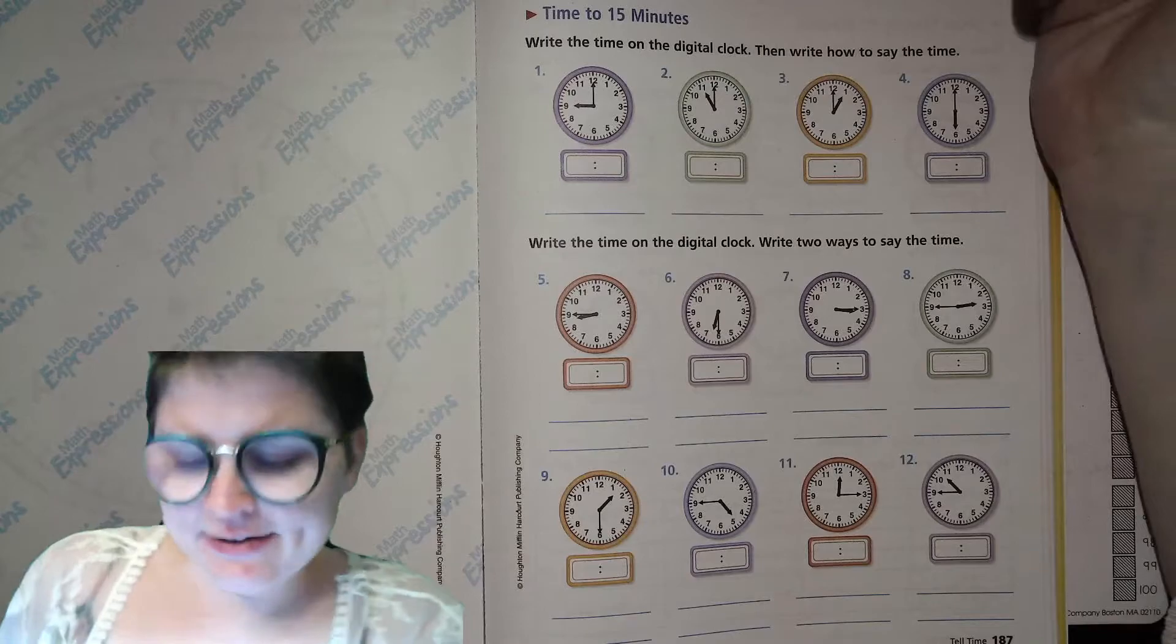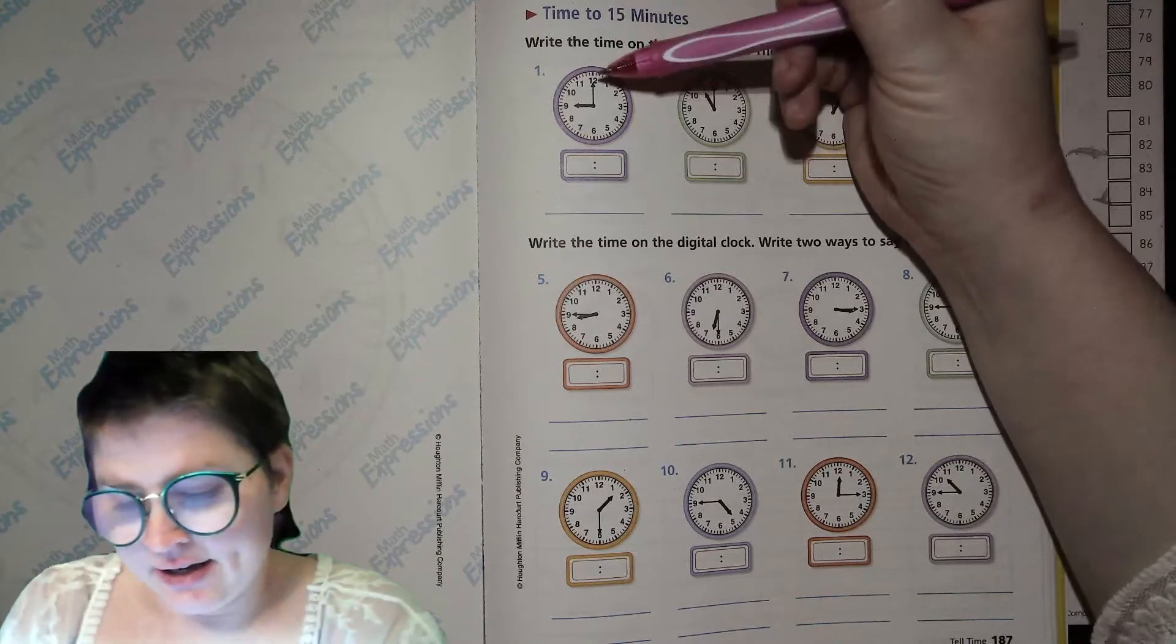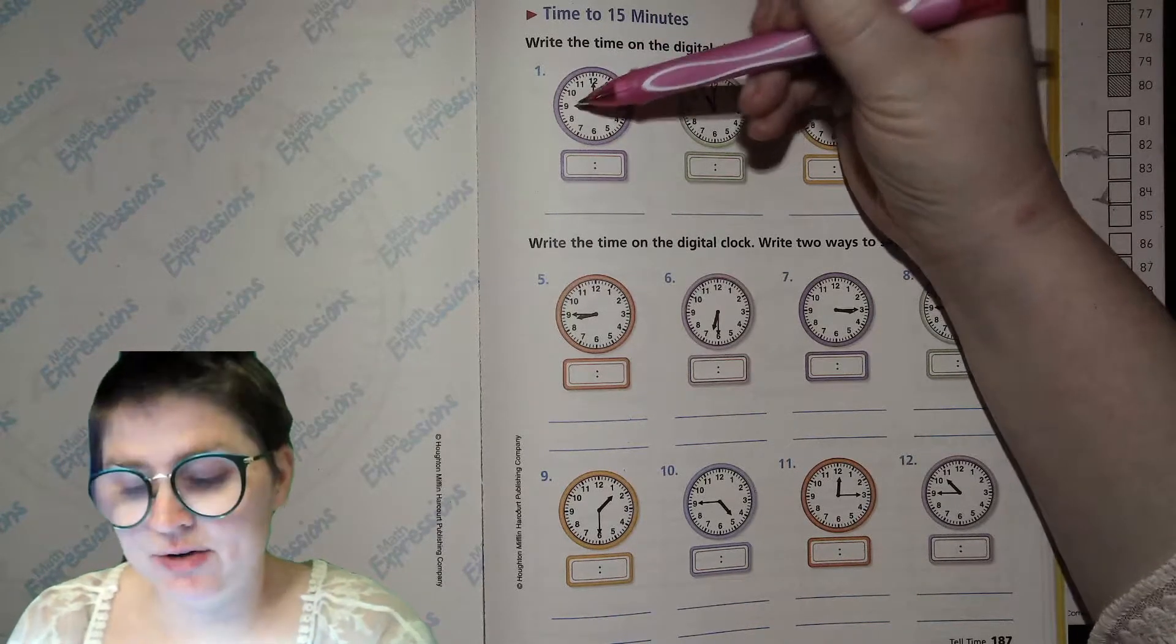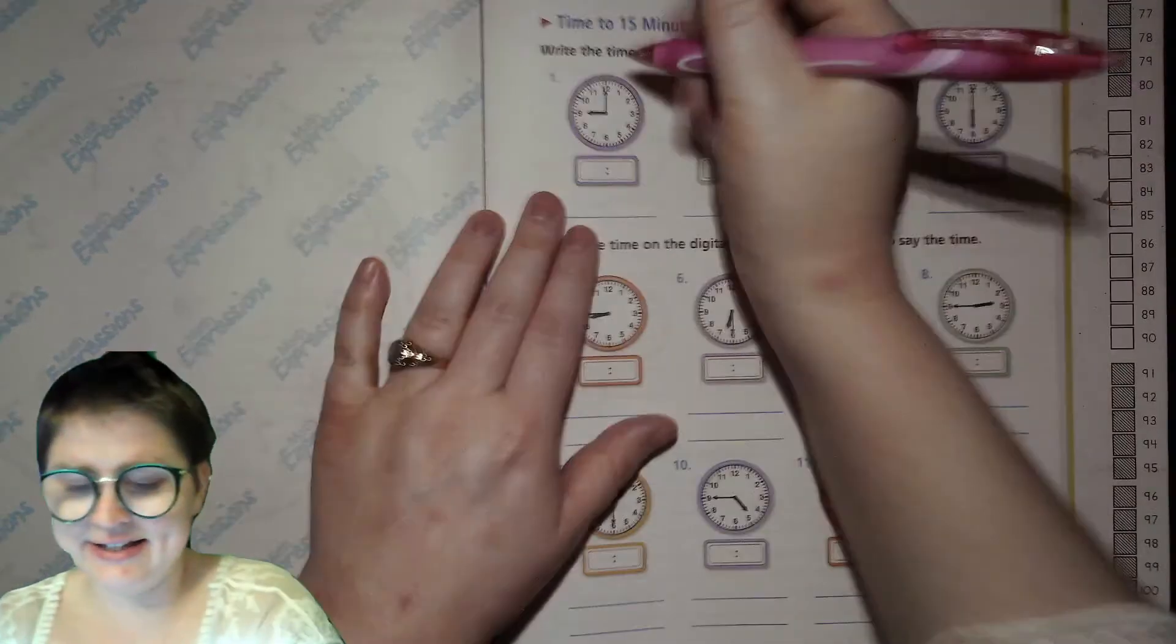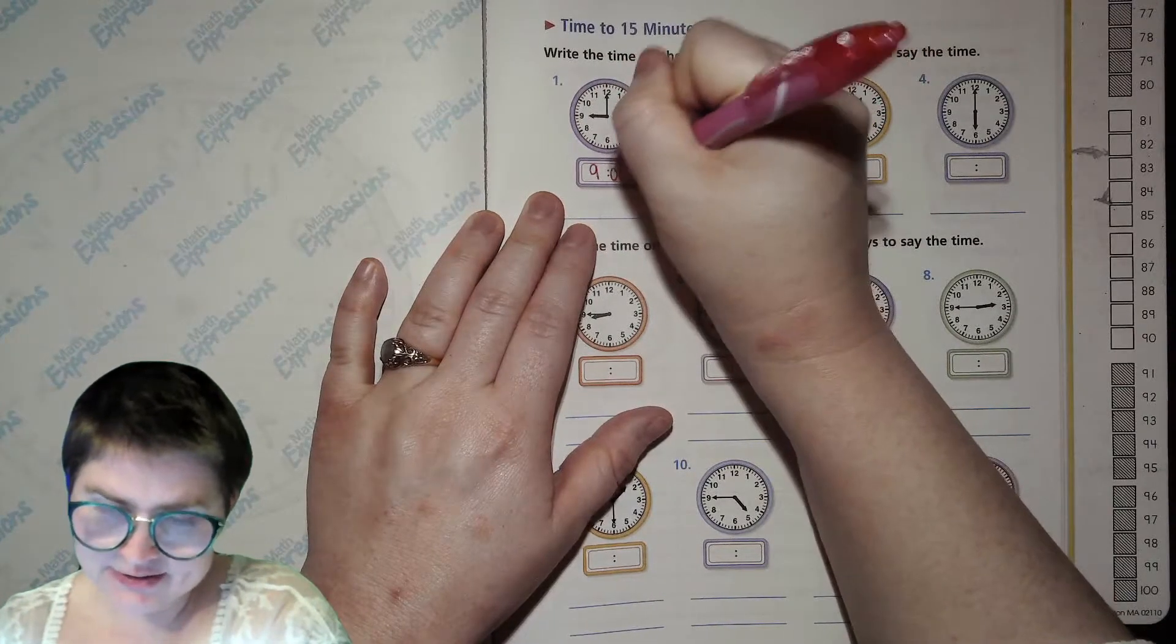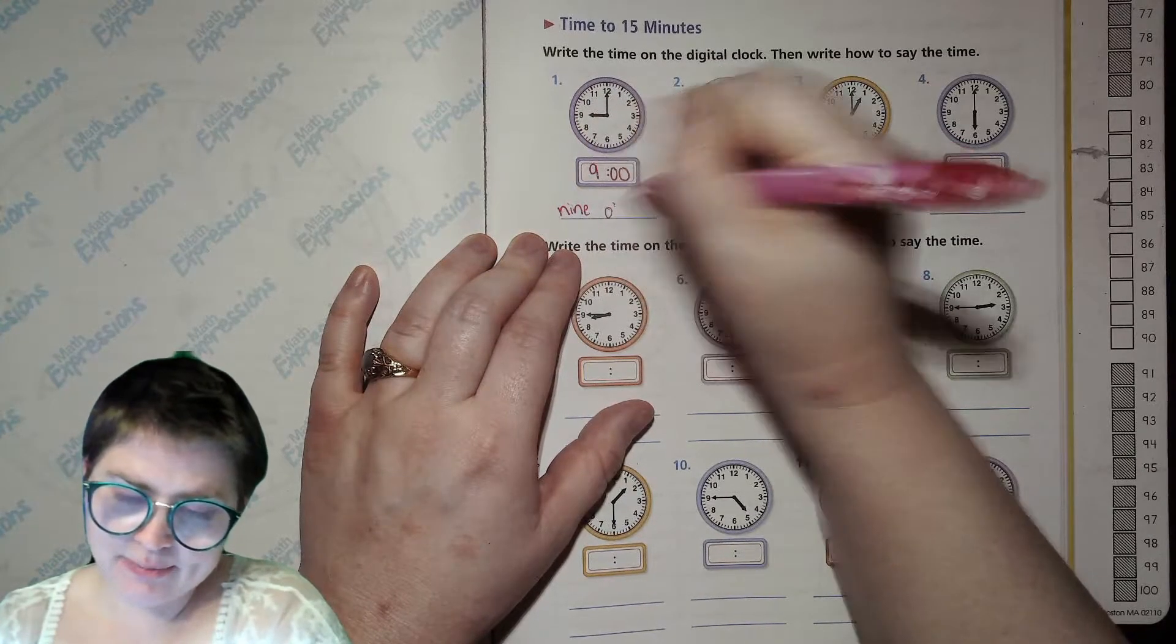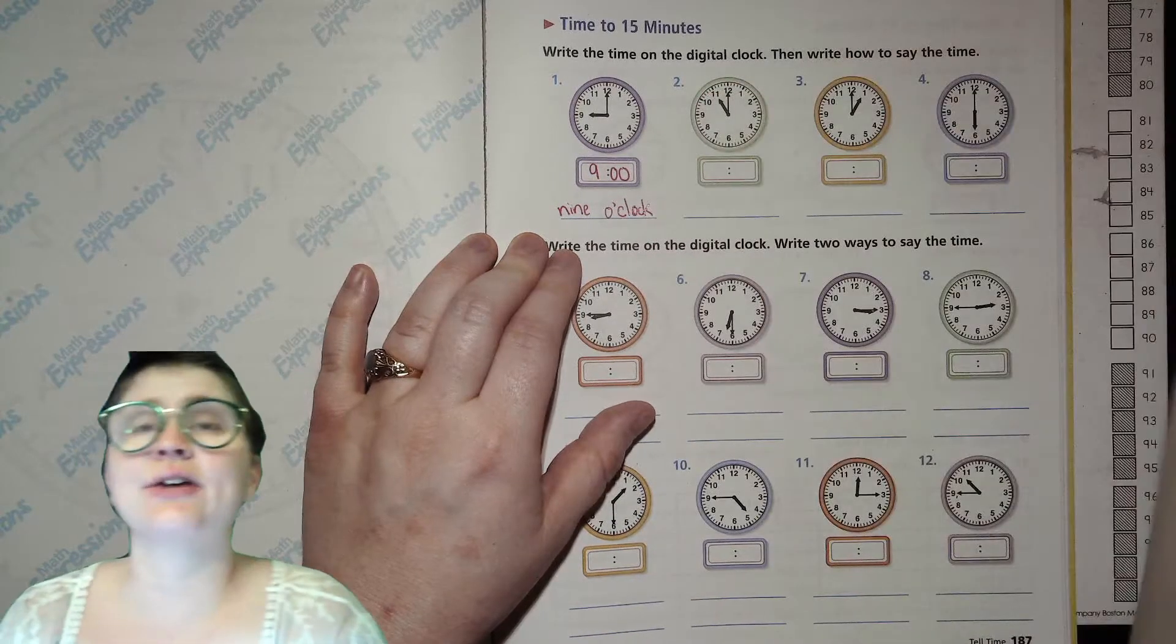So we're telling time to the 15 minutes. First, we look at the hour hand and we see it's pointing at the 9. And then we look at the minute hand and it's at the 0. So 9 hour, the hour is 9 and the minutes is 0. So 9, 0, 0, like that. And then we say 9, 0, apostrophe, clock. 9 o'clock. 9 on the clock.